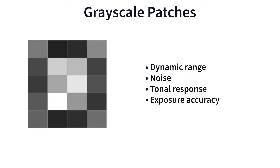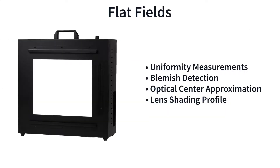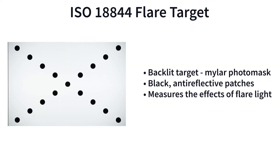Grayscale patches can be used to measure dynamic range, noise, tonal response, and exposure accuracy. Color patches can be used to calculate a color correction matrix under specific lighting conditions. Flat fields can be used to measure uniformity. Low reflectance patches adhered on an illuminated surface can be used to measure a system's response to flare light.